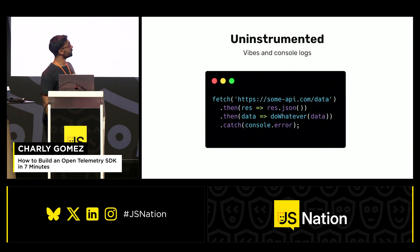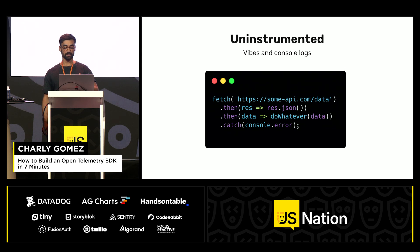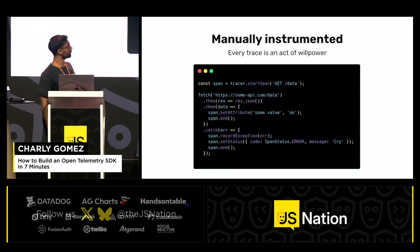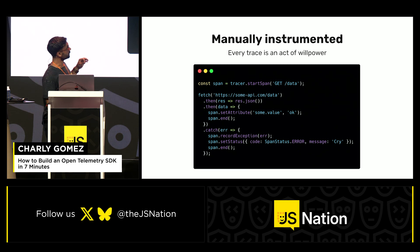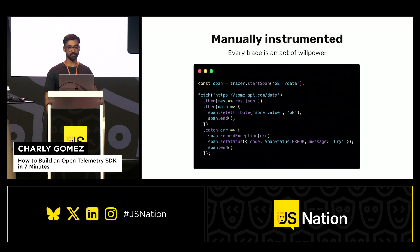Let's look into this in a bit more detail with the example of fetch. An uninstrumented fetch call would be a basic fetch call — it fetches data and then life goes on. A manually instrumented fetch call, in the case of OpenTelemetry, would look something like this. You have a tracer, which is an OpenTelemetry component, which starts a span.